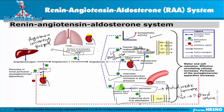This is basically how the RAA system works. With a better understanding of the RAA system, we can easily understand ACE inhibitors, ARBs, and renin antagonist medications, which we'll cover in the following presentation. If you have any questions about the RAA system, you can email us or contact us. Thanks.